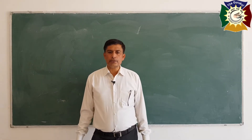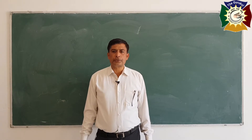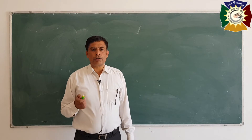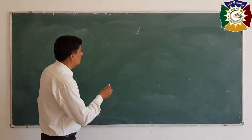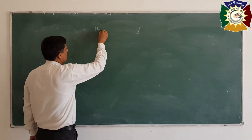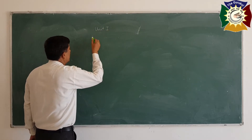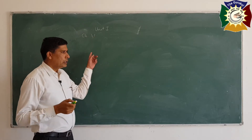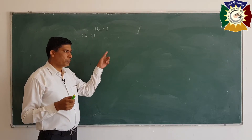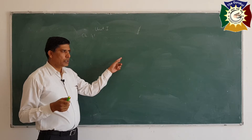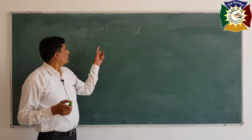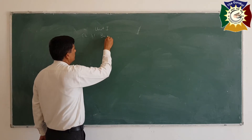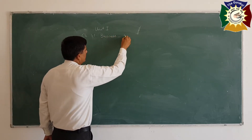We will start our syllabus from the very first unit. The first unit consists of four chapters. We will denote the first chapter as 1.1, second 1.2, third 1.3 and fourth 1.4. So chapter 1.1 is Business and Introduction.